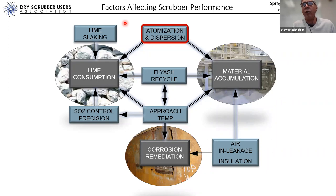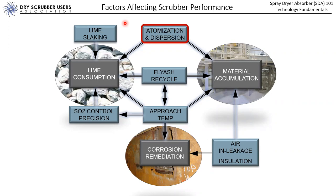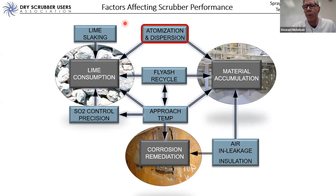Going back to the earlier question about flow splits in the B&W Niro style SDA with inlets at the top — the clarification asked about what the splits are and whether that split varies as a function of load variations. That's a perfect segue into the next segment, because we're going to address that specifically — talking about the split between the roof and central gas dispersers in that specific design. We'll hit that right on in a few minutes.